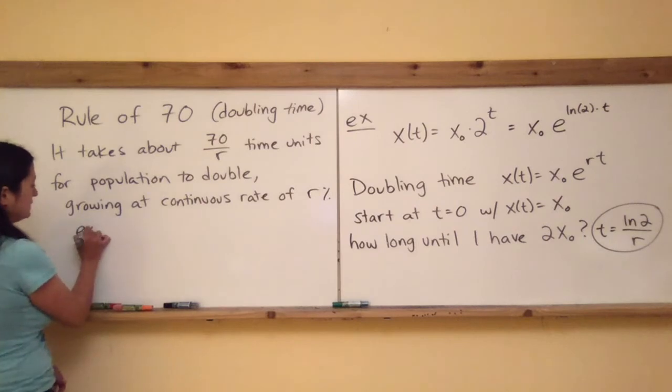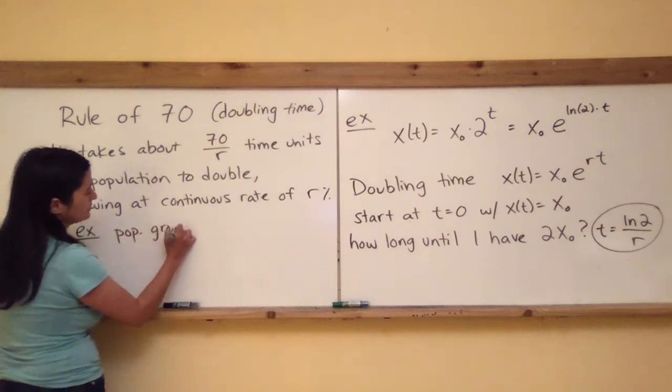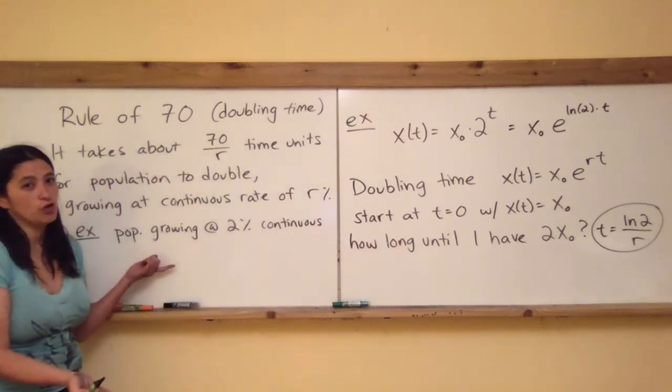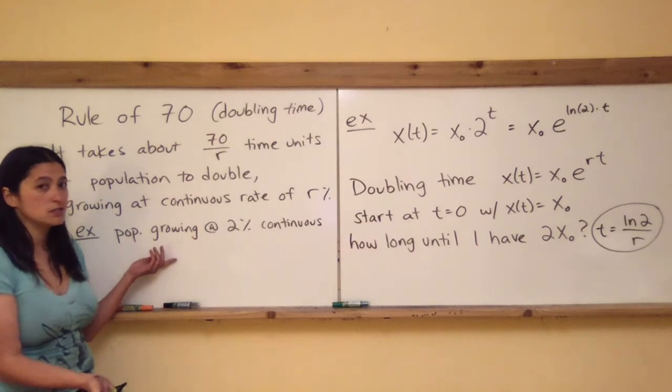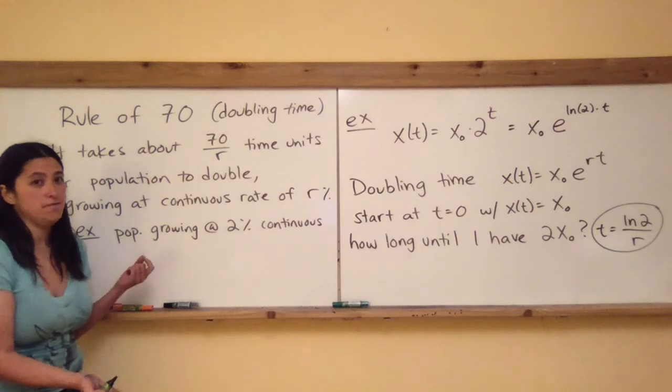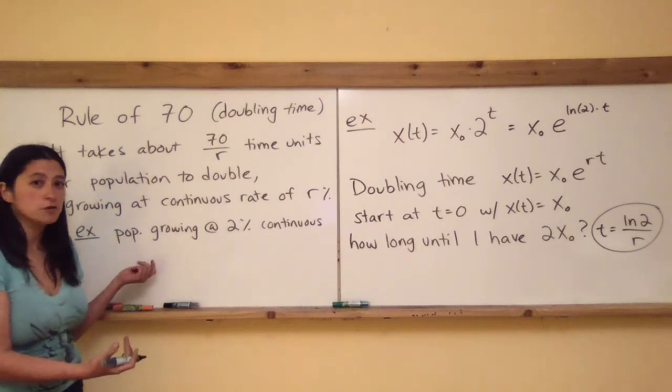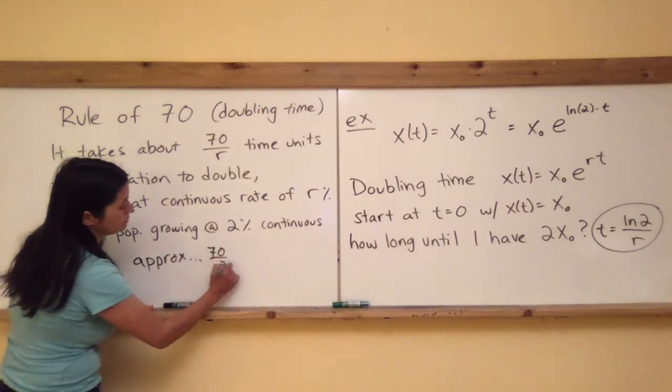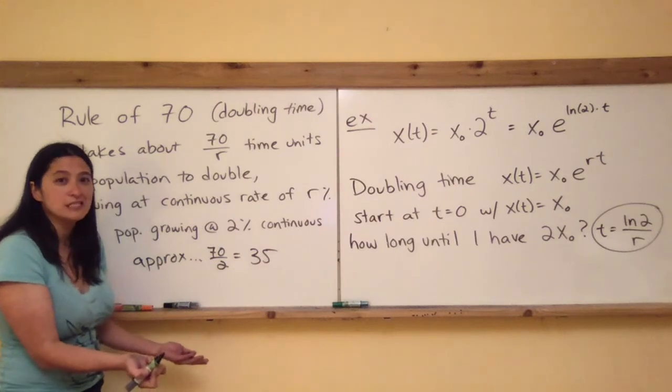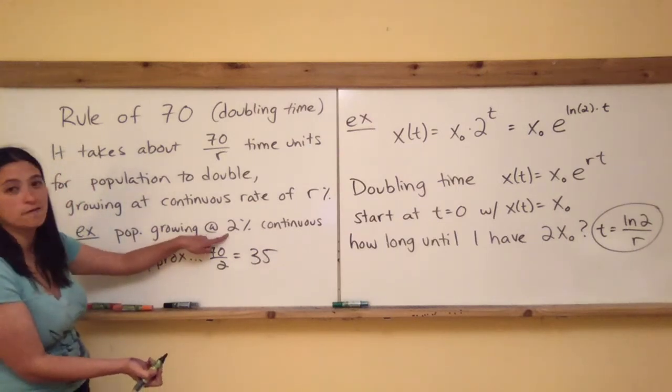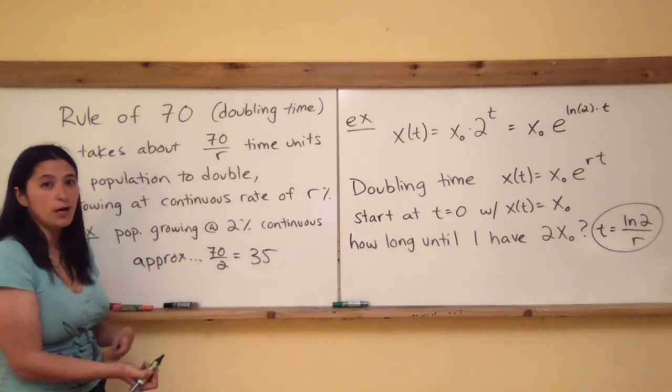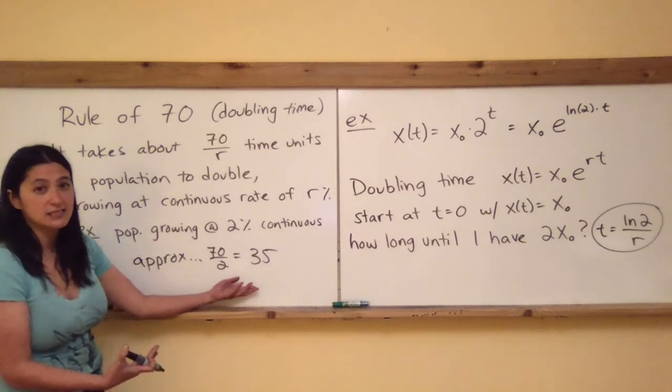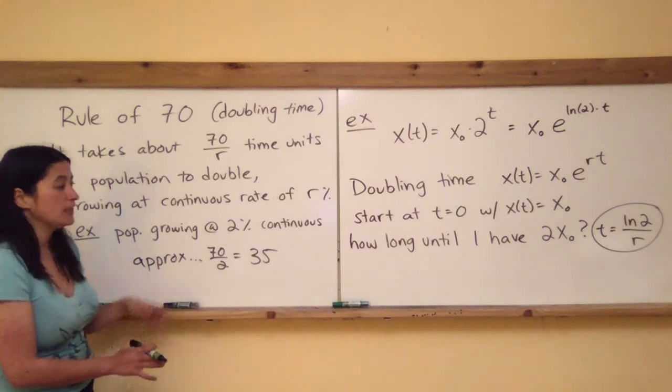And that's if we know that it's growing at a continuous rate of R%. For example, let's say my population is growing at about 2% as a continuous growth rate. How long is it going to take for that population to double? Or let's say that I just invested some money at 2% continuous growth rate. How long would it take for my investment to double? The rule of 70 says that's going to be approximately 70 over 2, so 35 time units. So if this was growing at a continuous yearly rate of 2% continuously per year, that would be 35 years. Or if this is a population of bacteria that's growing at a daily continuous growth rate of 2%, that would be 35 days.